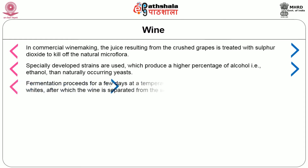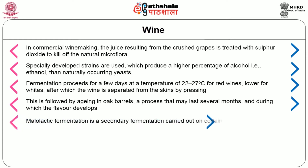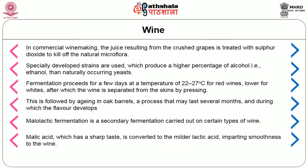Fermentation proceeds for a few days at a temperature of 22 to 27 degrees centigrade for red wines, lower for whites, after which the wine is separated from the skins by pressing. This is followed by aging in oak barrels, a process that may last several months during which the flavor develops. Malolactic fermentation is a secondary fermentation carried out on certain types of wine. Malic acid, which has a sharp taste, is converted to the milder lactic acid, imparting smoothness to the wine.